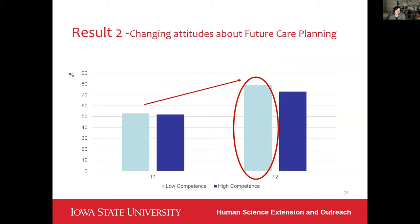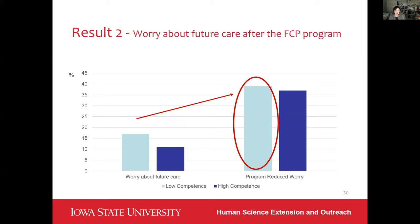Now let's look at the psychological impacts such as changing attitudes and worry. In terms of attitudes about future care planning, after the first session, 51% of participants reported that their opinions had changed. Results suggest that participants' thoughts towards future care planning changed significantly between the first and second follow-up for both groups. The program also reduced worry about future care planning — both groups reported less worry after completion of the program. For the low competence group, 18% reported still worrying about future care planning compared to 11% of the high competence group before the program, but after the program, 35% of both groups reported that the program had significantly reduced their worries.